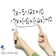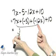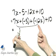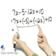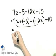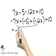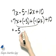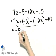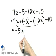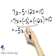12 minus 7 is 5, and I keep the sign of the number with the larger absolute value, so this would be negative 5 — and do not forget x — negative 5x.